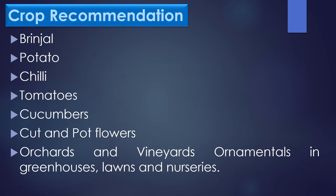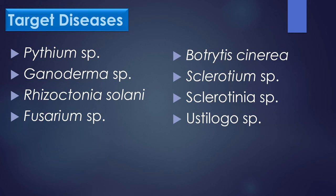Crop recommendations: Trichoderma species is recommended for crops like brinjal, potato, chili, tomatoes, cucumbers, cotton, pot flowers, orchards and vineyards, ornamentals in greenhouses, lawns, and nurseries. Trichoderma species is highly effective against Pythium species, Ganoderma species, Rhizoctonia solani, Fusarium species, Botrytis cinerea, Sclerotium species, Sclerotinia species, and Ustilago species.